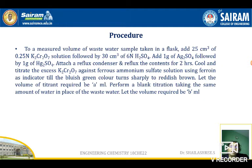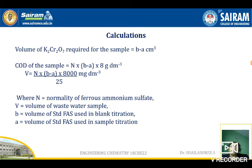So the FAS consumed for the normal back titration is A mL and for the blank titration is B mL. Now calculate the COD using the formula: COD = N × (B − A) × 8000 / 25, expressed in milligrams of oxygen per dm³. Here N is the normality of FAS, B is the blank titration value, A is the back titration value, and 25 is the volume of wastewater taken.